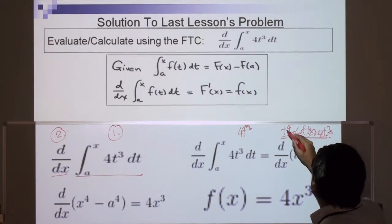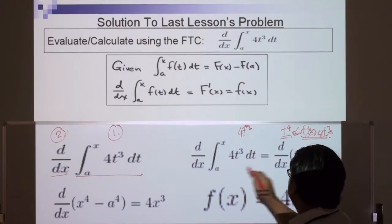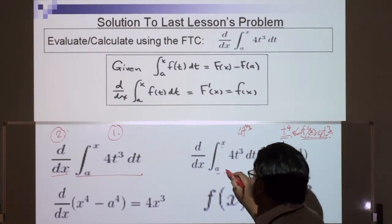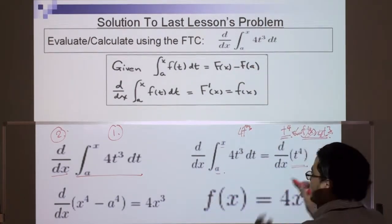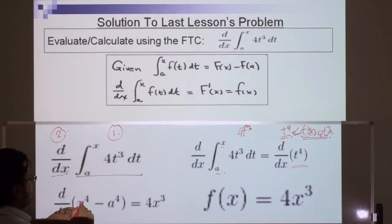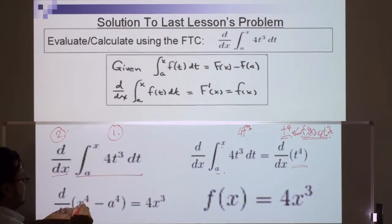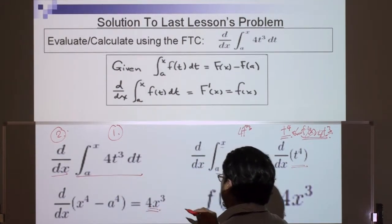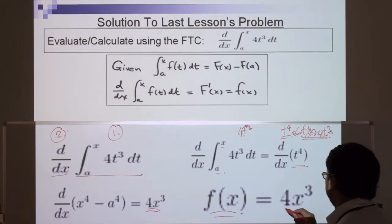So now we have T⁴. What we do is put in our upper and lower limits using T⁴, then differentiate T⁴ with X and A. Using this formula — F(X) take away F(A) — we have X⁴ minus A⁴, and that equals 4X³. Therefore, the function of X is equal to 4X³.